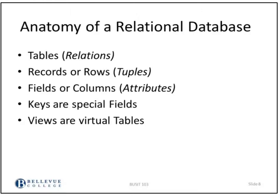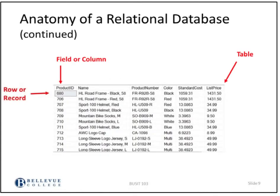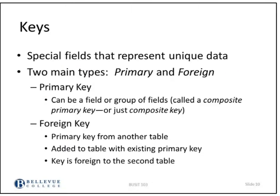A relational database is made up of different structural building blocks: tables (also called relations), records or rows (also called tuples), fields or columns or attributes, keys which are special fields, and views which are virtual tables. If you are familiar with spreadsheets, your spreadsheet can be viewed as a table — it has rows or records, and fields or columns. Fields and columns represent attributes.